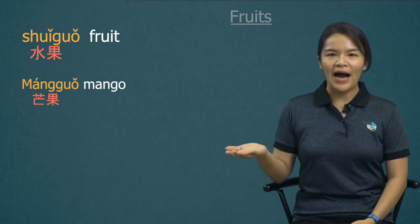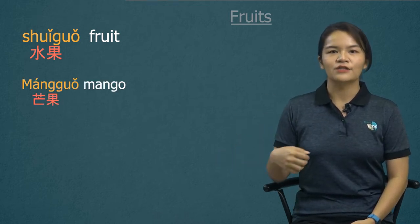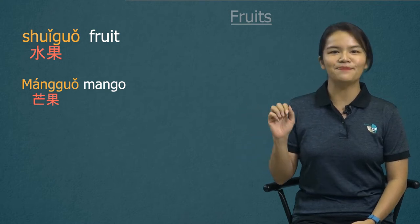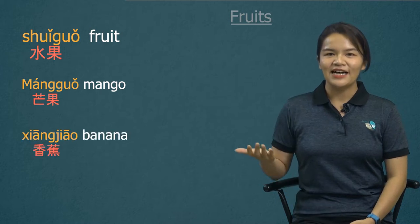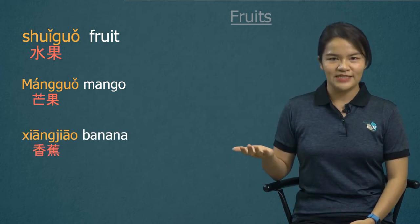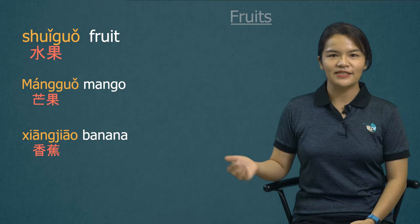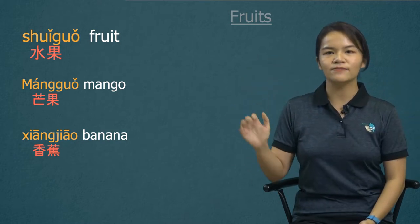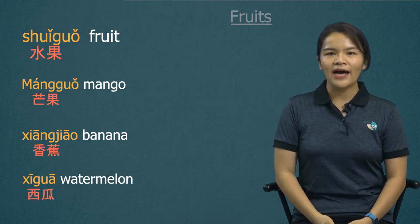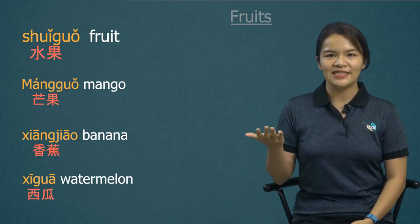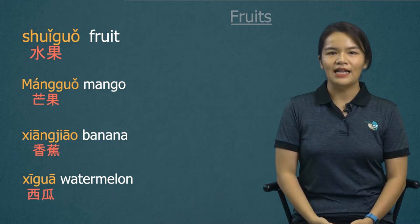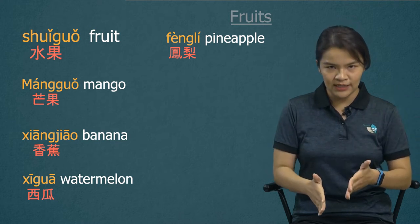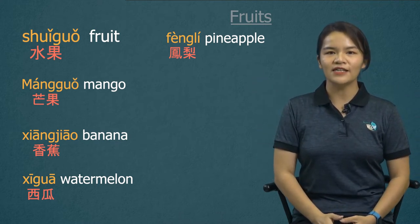First one: 芒果, 芒果. Try to guess what is 芒果. Yes, it's mango. Next one: 香蕉, 香蕉 — banana. It's two high flat tones combined together: 香蕉. One more: 西瓜, watermelon, 西瓜. Last one: 凤梨, pineapple. The tone is falling and rising: 凤梨, pineapple.